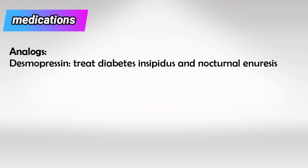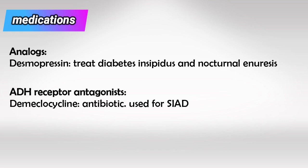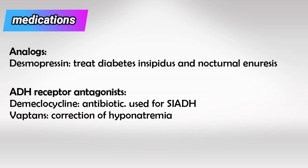Analogues of ADH such as desmopressin are used to treat diabetes insipidus and nocturnal enuresis. We have two main medications that can antagonize the ADH receptor. Demeclocycline, which is a tetracycline antibiotic, can antagonize the ADH receptor as a side effect and is used to treat syndrome of inappropriate ADH. Vaptans are drugs that end with the suffix '-vaptan' and can be used to correct hyponatremia.